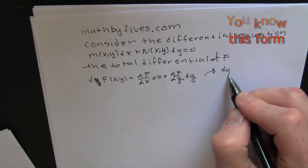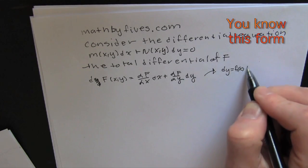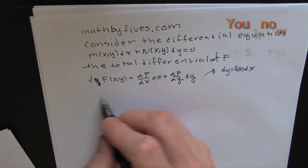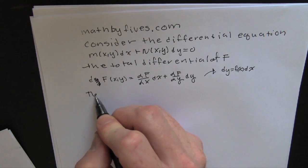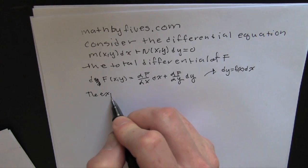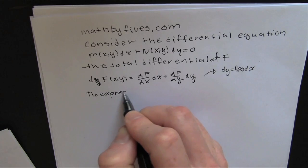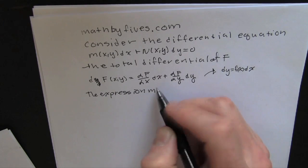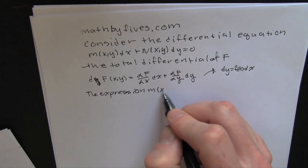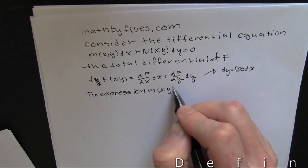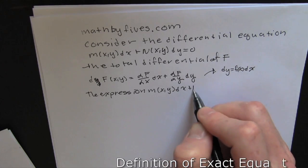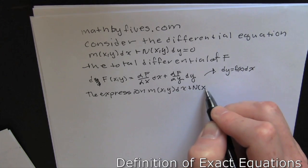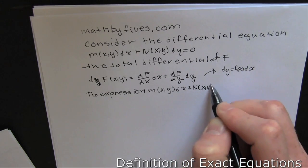It's gonna be the partial derivative of f with respect to x, dx, and the partial derivative of f with respect to y, dy. You're familiar with this form — that's it in one-dimensional calculus. So then we'll keep on keeping on. We're gonna define the definition of exact equations.